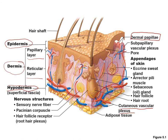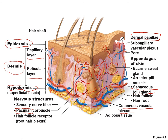You can see a sweat gland, its duct, and a pore. There is the arrector pili muscle, responsible for goosebumps, and a sebaceous or oil gland. The yellow lines represent sensory neurons — free nerve endings responsible for the sensation of pain and temperature. The structure called the Pacinian (lamellar) corpuscle is a sensory receptor for pressure and vibration. Hair follicle receptors sense movement of the hair.